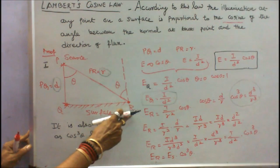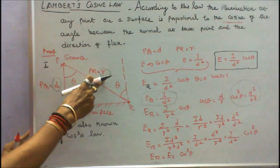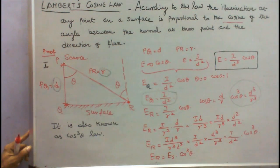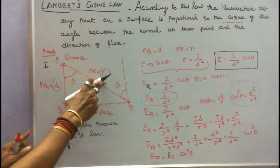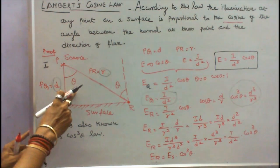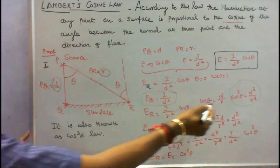Now I want to find what is the illumination at the point R. Here the distance is D. Here the distance is R, the distance between P and R. What is cos theta? Cos theta is equal to D by R.